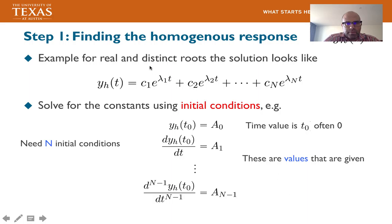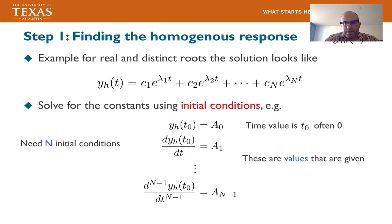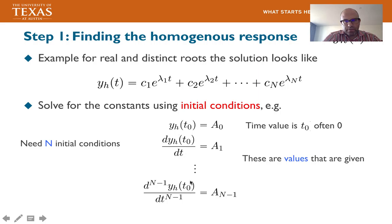The homogeneous solution is the sum of contributions from each mode. For real distinct roots, the general solution is y(t) = c_1·e^{λ₁t} + ... + c_n·e^{λₙt}. The unknown coefficients are solved using initial conditions. For example, the initial conditions might specify the value and derivatives of y at t = 0: y(0) = a_0, y'(0) = a_1, through the (n-1)th derivative equal to a_{n-1}. With n unknown coefficients, you only need n initial conditions.